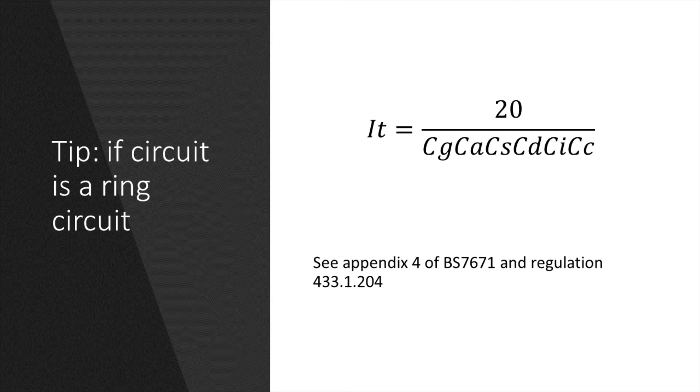So for this reason, when calculating the current carrying capacity for the cable, we can use 20 divided by the correction factors instead of the rating of the protective device. And you may find this useful when calculating the current carrying capacity IZ of the cable.